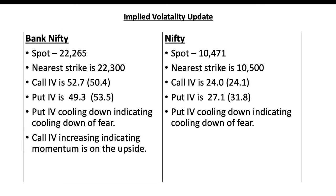Coming to the implied volatility: something interesting in Bank Nifty — the call IV was shooting up. The call IV was 52.7 for the 22,300 strike price, while the put IV was only 14.3. The clear trend is on the upside. In Nifty, the call IV is around 24 levels, but the put IV has also cooled down. The cooling off in put IVs in both Nifty and Bank Nifty clearly indicates that people are not afraid of the downside and are going for the upside only. Once we see put IVs increasing — above 50 in Bank Nifty and above 30-plus levels in Nifty — then we could see some reversal, as indicated by India VIX and implied volatility.